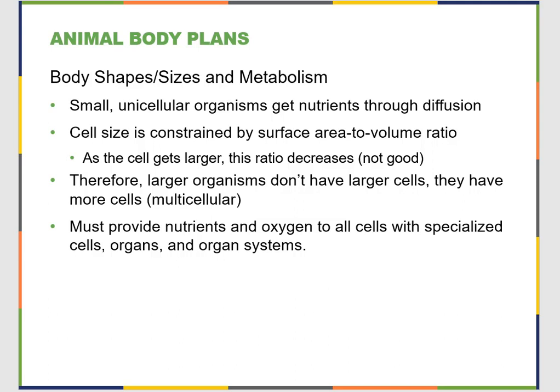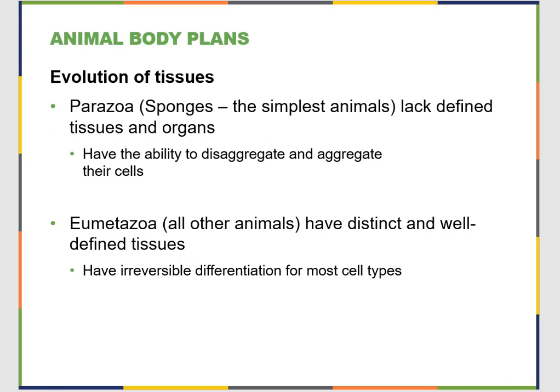So larger organisms can't have really big cells because it becomes really ineffective at removing dangerous things and taking in the good stuff — you just have to have more cells. As you get more cells, you add layers of complexity. So let's talk about those body plans and the evolution of tissues, because that's what you get when you start talking about complexity.